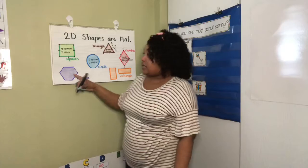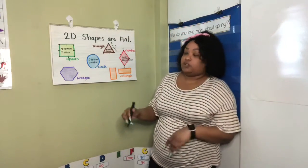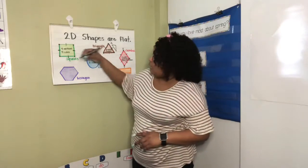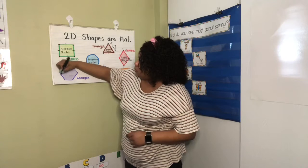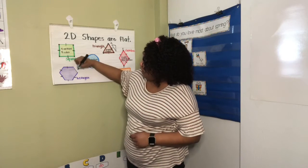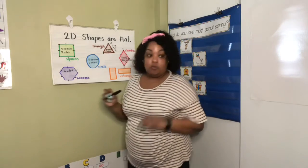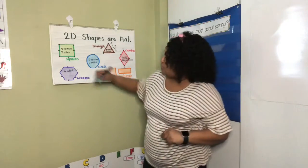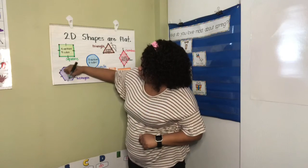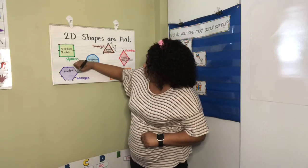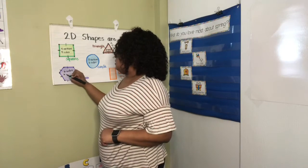Moving on down here, this is the shape with the most sides and the most vertices. It's a hexagon. A hexagon, as you remember, has six sides. One, two, three, four, five, six. Six sides. And remember, wherever the sides touch, that's a vertice. One, two, three, four, five, six. Six vertices.